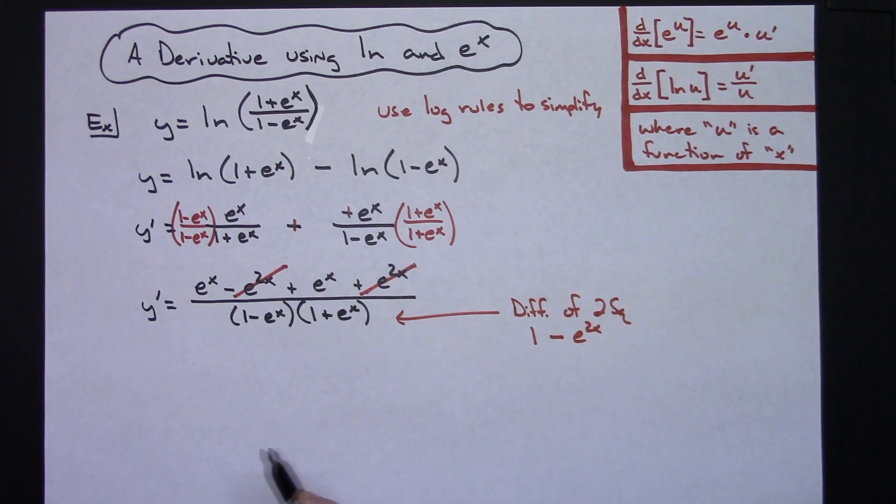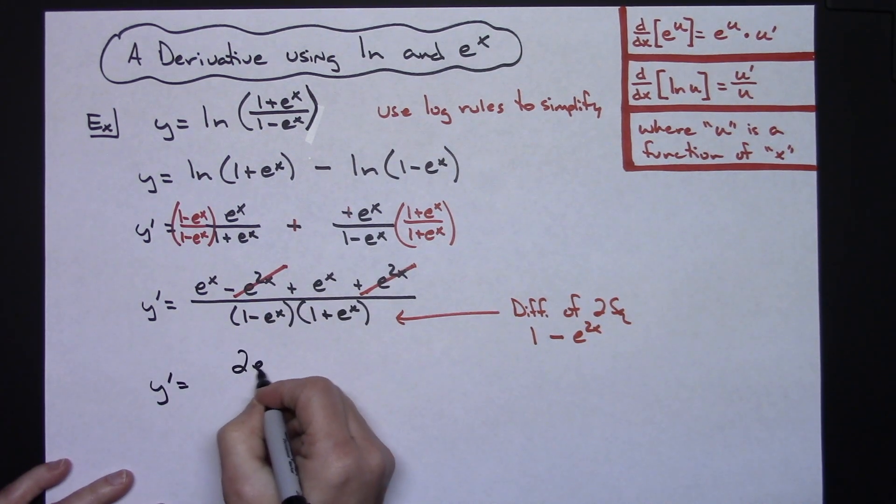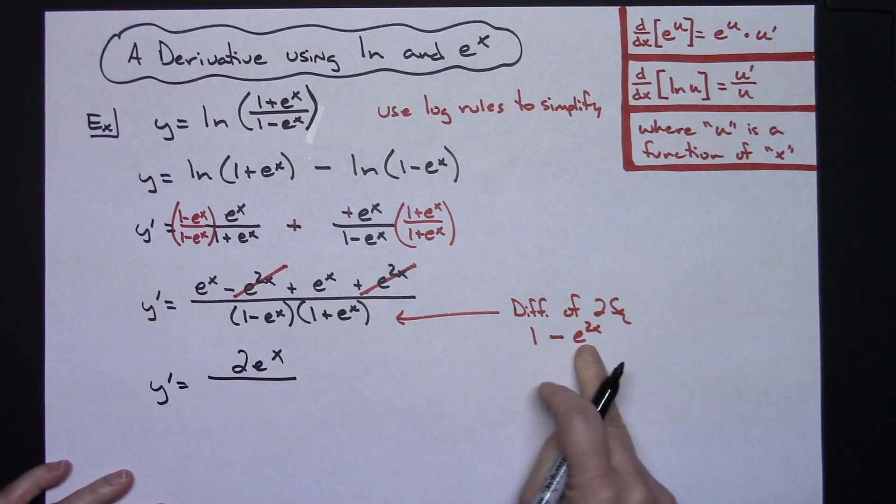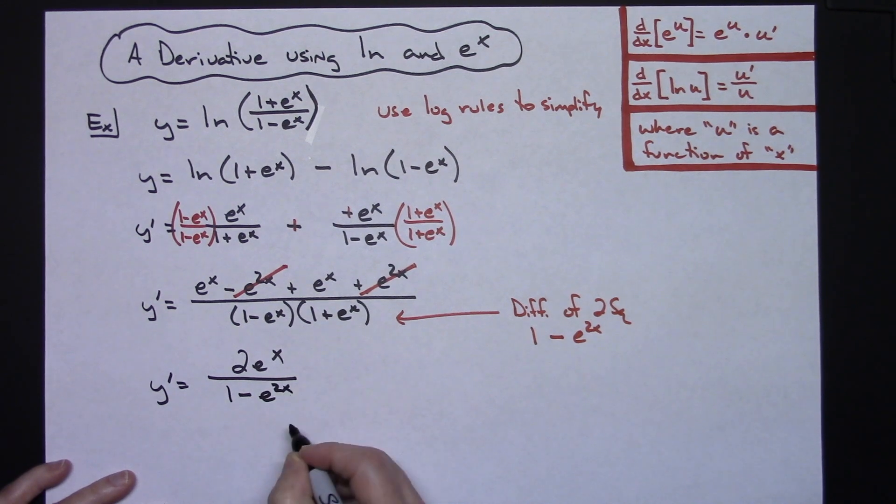So I can simplify this down to y prime equals 2 on top, 2 e to the x all over this written out or multiplied out, foiled out you would get 1 minus e raised to the 2x.